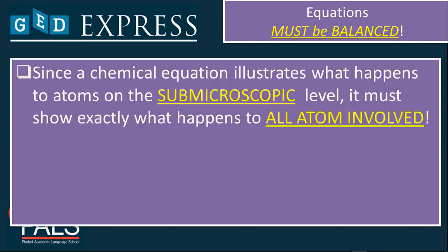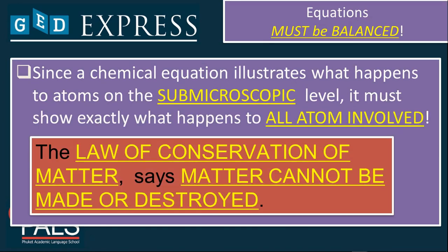Equations must always be balanced because it follows the law of conservation of matter or law of conservation of energy, which says that matter cannot be made or destroyed. A chemical equation illustrates what happens to atoms on submicroscopic level, and it must show exactly what happens to all atoms involved. The law of conservation of matter says that matter can neither be created nor destroyed. It only transforms from one form to another.